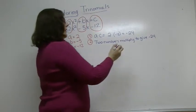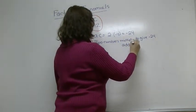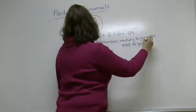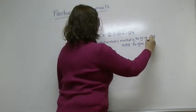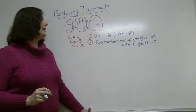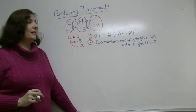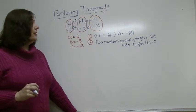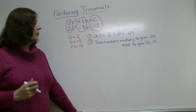And then they must add to give the middle term, the B term, which is negative 5. So we need to think of 2 numbers that multiply to give us negative 24 but add to give us negative 5. So what I do is I go through the factors of 24.